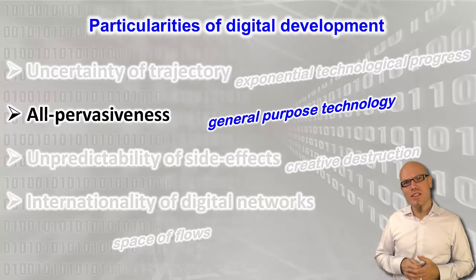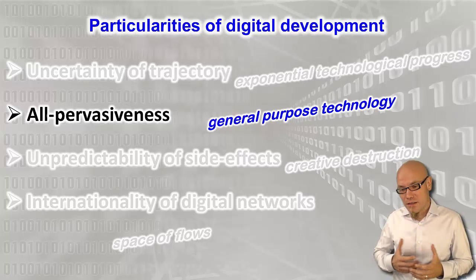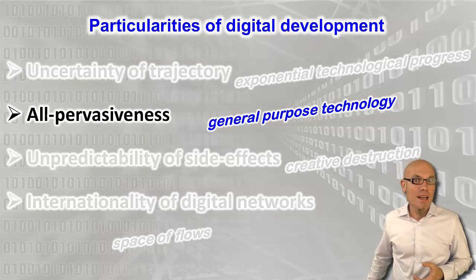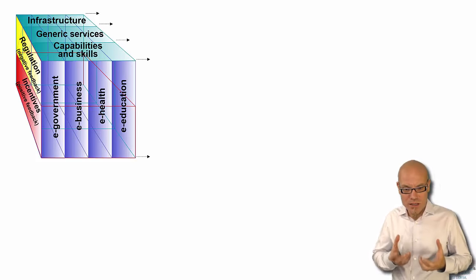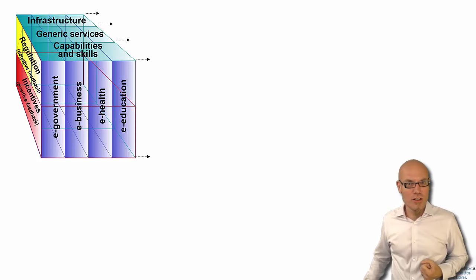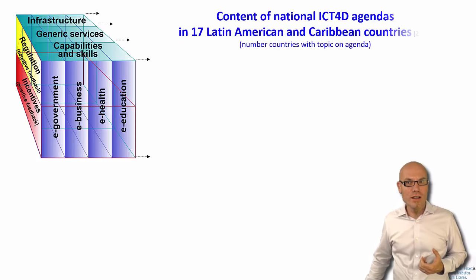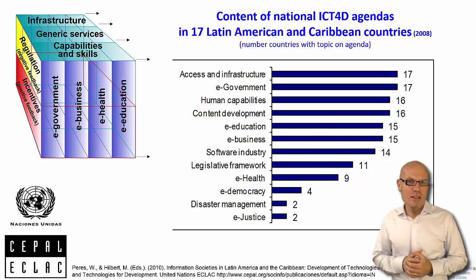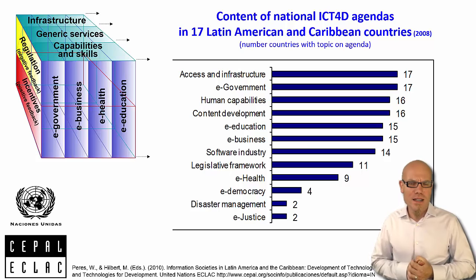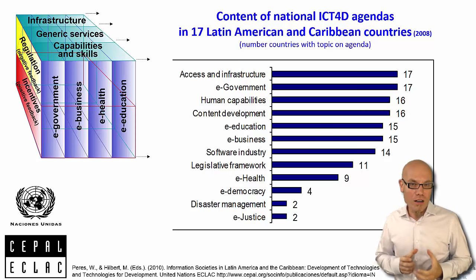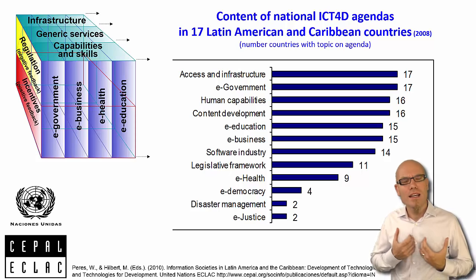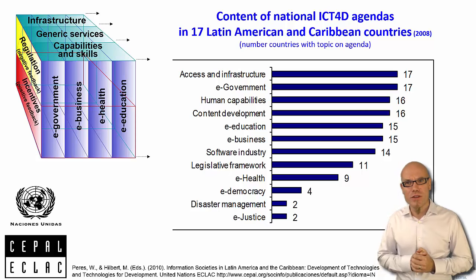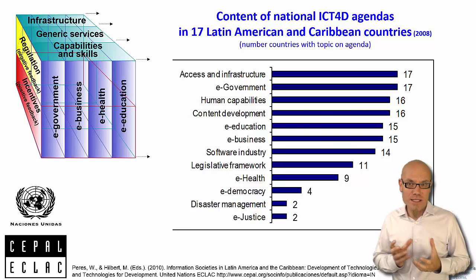Digital technology is a general-purpose technology — you can use it for many different purposes, and that affects policy agendas. They can be very different because digital technology can be used to achieve very different goals. For example, looking at the national digital development agendas of 17 Latin American countries that we researched, all of them agree that infrastructure and e-government are important, and most also agree that human capabilities and skills must be trained.